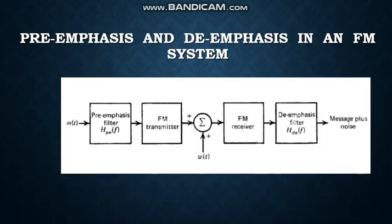In FM system, we use a pre-emphasis circuit before FM transmission and a de-emphasis circuit after FM reception. First, the message signal passes through the pre-emphasis circuit whose transfer function is H_PE(f). This signal goes to the FM transmitter. Then, in the system, it mixes with noise. Then, this signal passes through the FM receiver. After receiving the original signal, we again de-emphasize the signal whose transfer function is H_DE(f).